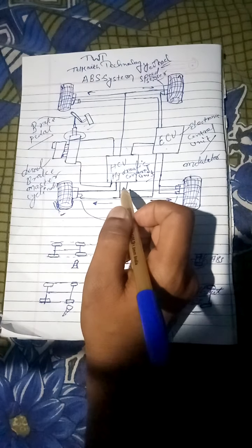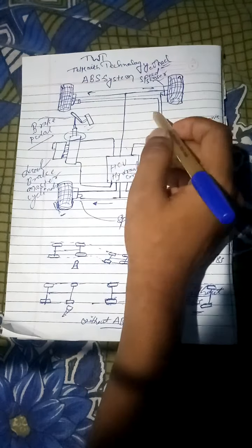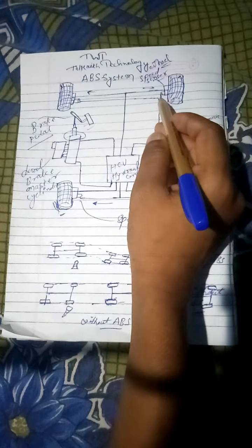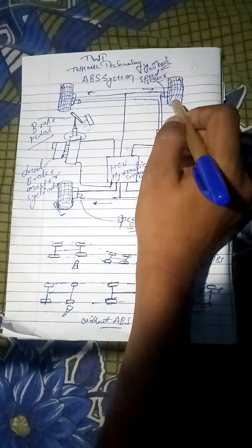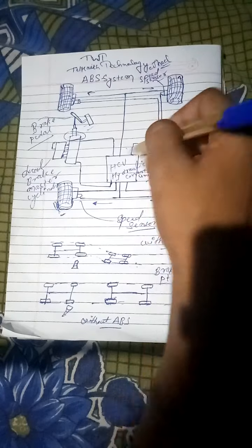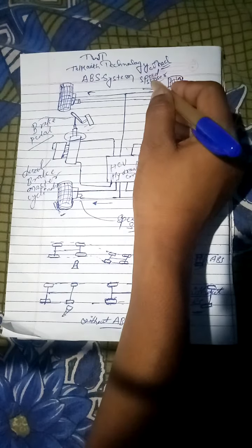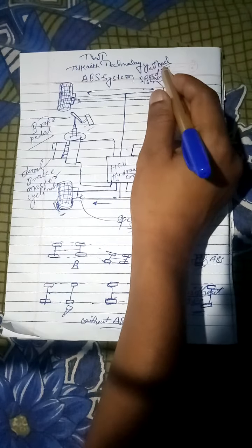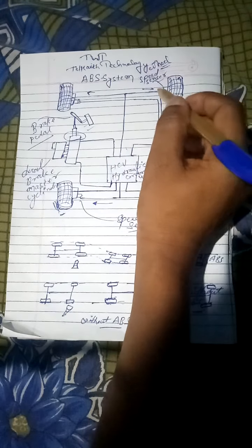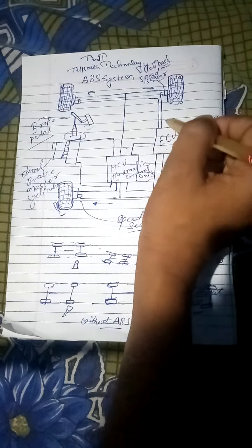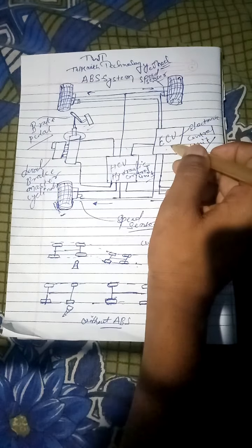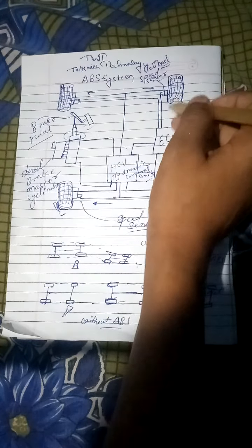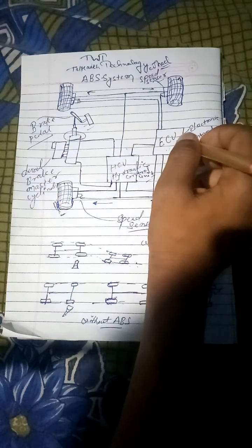Whenever there is running condition of the vehicle, the wheel speed is sensed by the wheel speed sensor. Wheel speed sensor senses the speed of the wheel and sends it to the ECU.